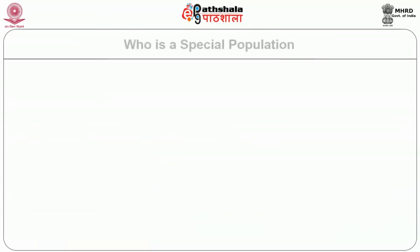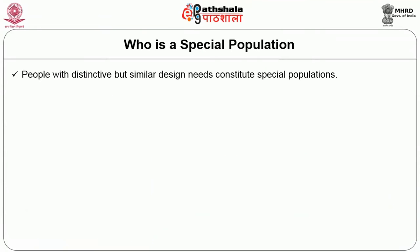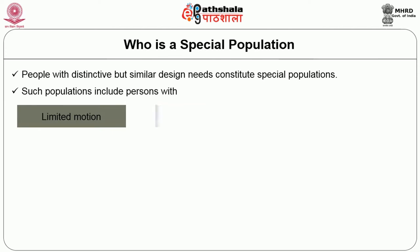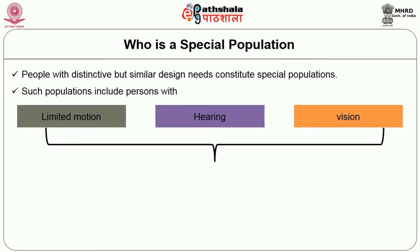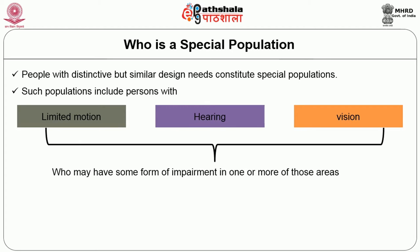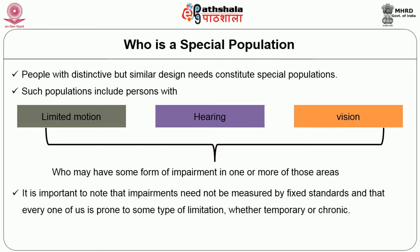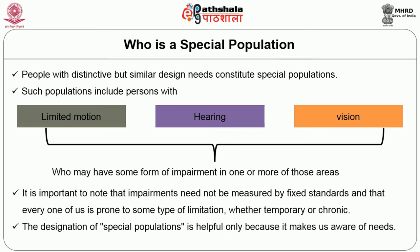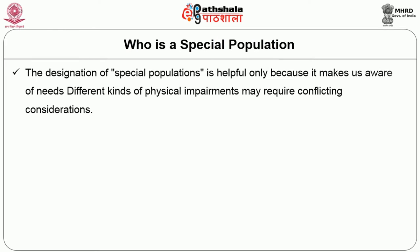An awareness of the importance of caring for the fragile environment that sustains life has also had a significant impact on the practice of design. The main objective of this lesson is: who is a special population? People with distinctive but similar design needs constitute special populations. Such populations include persons with limited motion, hearing, or vision, as well as the elderly who may have some form of impairment in one or more of these areas. It is important to note that impairments need not be measured by fixed standards and that every one of us is prone to some type of limitations, whether temporary or chronic.